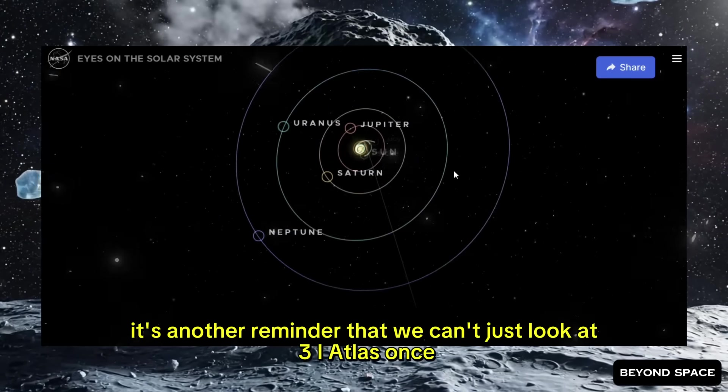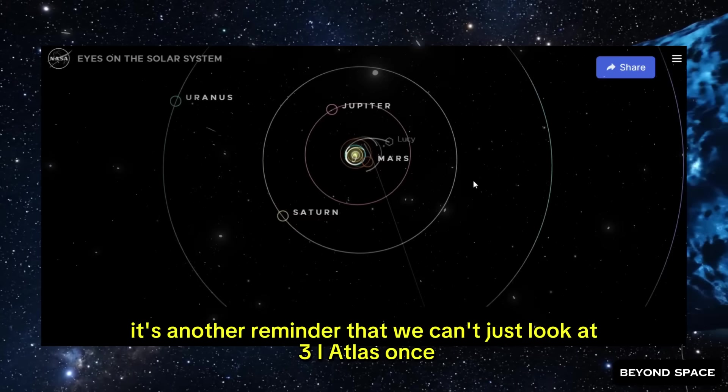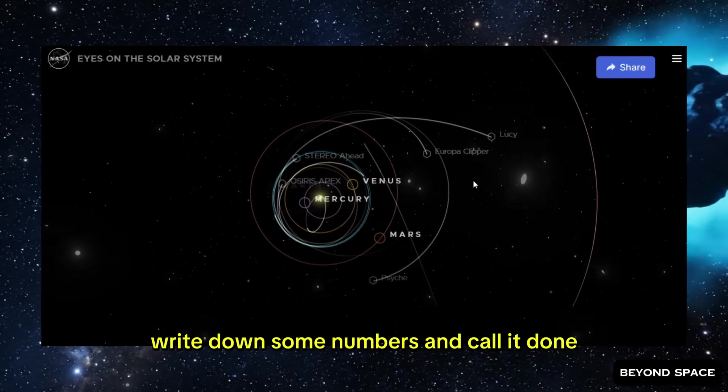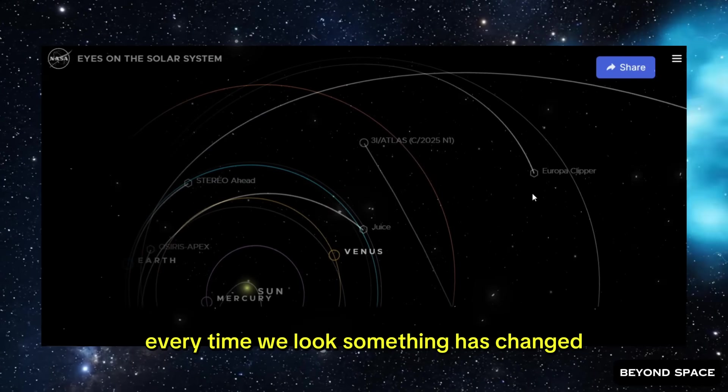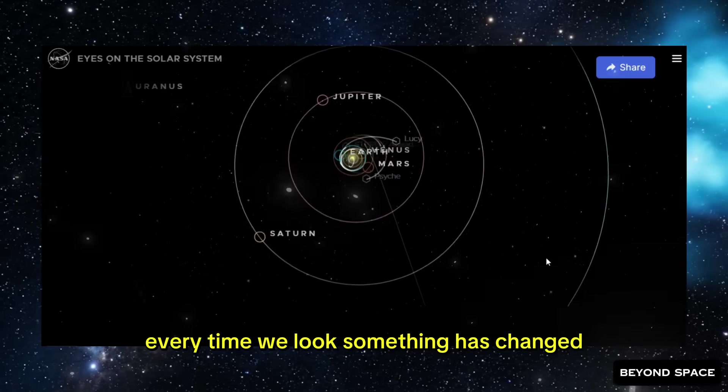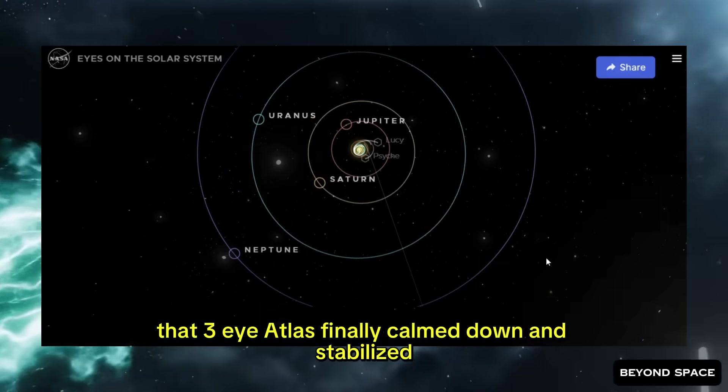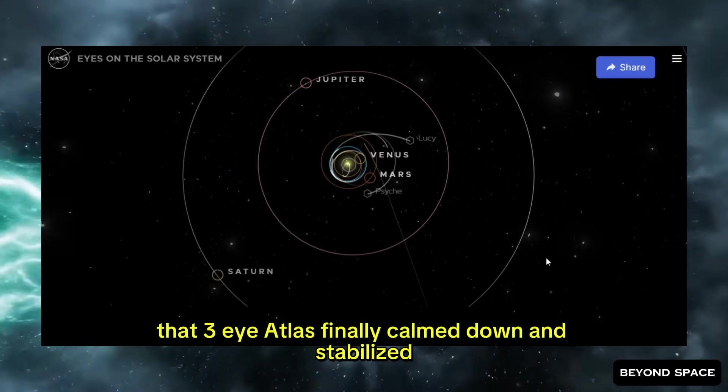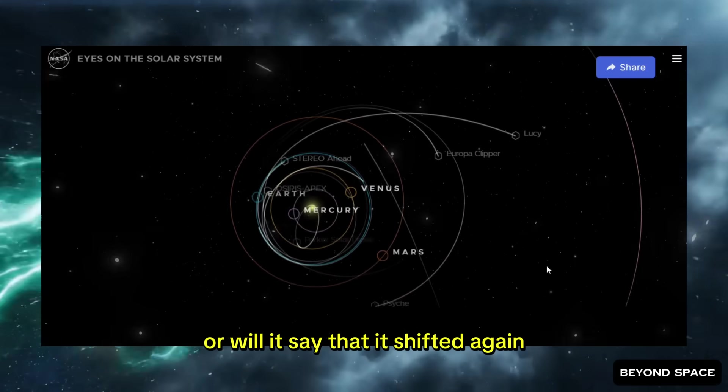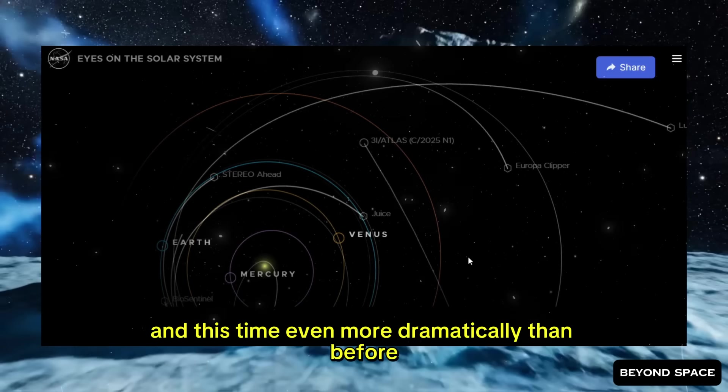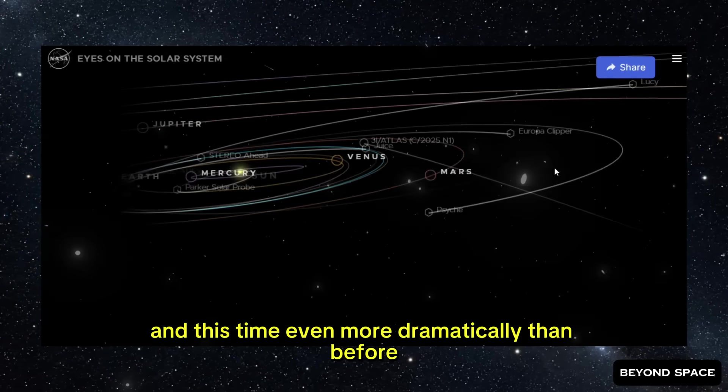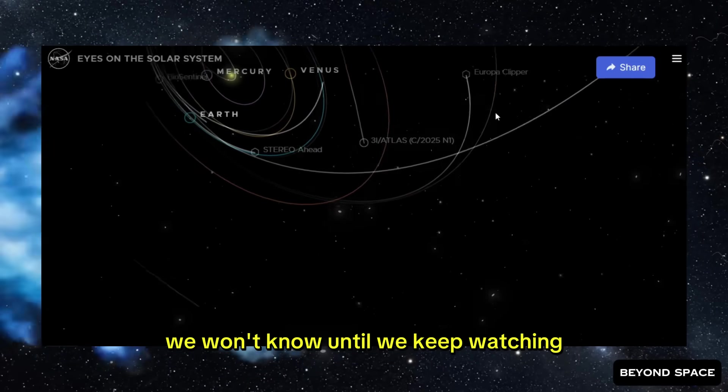It's another reminder that we can't just look at 3i Atlas once, write down some numbers, and call it done. Every time we look, something has changed. Every update raises new questions. Will the next alert say that 3i Atlas finally calmed down and stabilized? Or will it say that it shifted again, and this time even more dramatically than before? We won't know until we keep watching. And that's exactly what's happening.